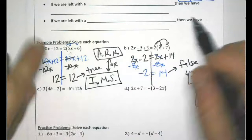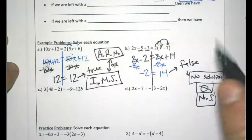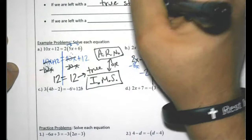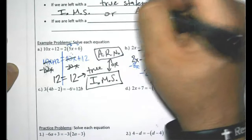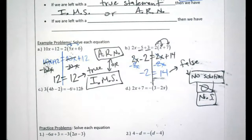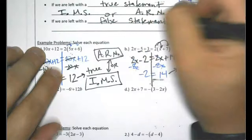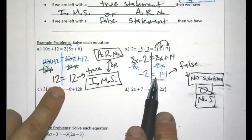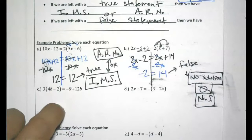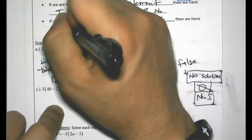Sometimes when we solve equations, we will not get one specific answer. If we're left with a true statement — like 12 equals 12 — then we have infinitely many solutions, also called all real numbers. If we're left with a false statement — like negative 2 equals 14 — then we have no solution.